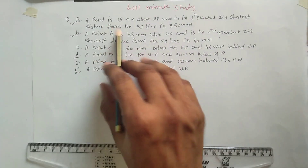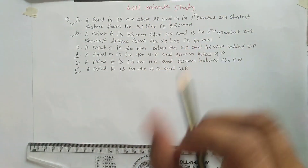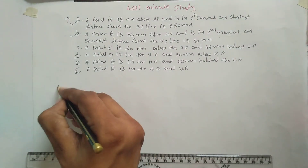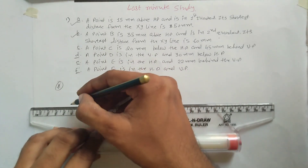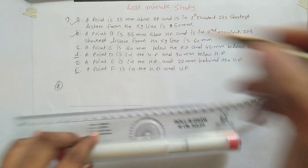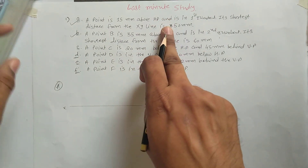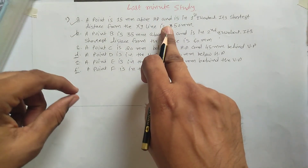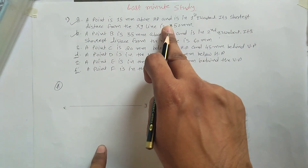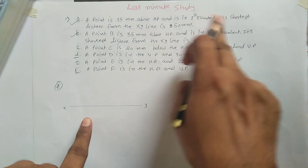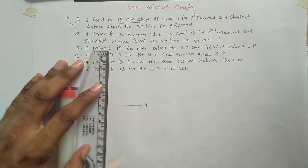First of all, point A is 15mm above the HP and is in the first quadrant. Since it is in the first quadrant, you have to draw the XY line. Being in the first quadrant means the front view will be above the XY line and the top view will be below the XY line. The 15mm is given to us.